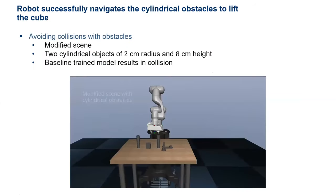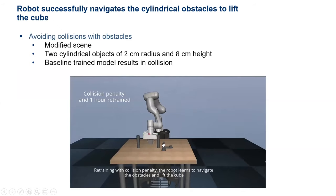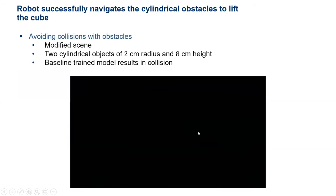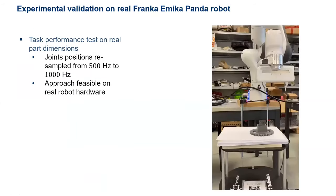The third modified scenario introduces two obstacles that leave very little room for the robot hand to position itself around the cube before lifting. If the robot even touches one obstacle, a penalty is given. The baseline model was colliding with the cylindrical obstacle while lifting the cube. After retraining for one hour, the robot learns quite quickly to navigate around the obstacles and successfully grasp and lift the cube.